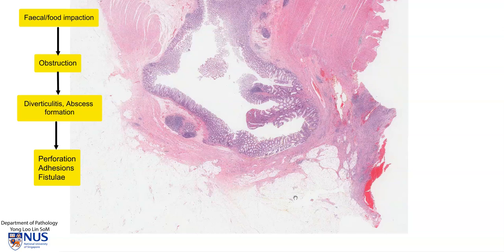Hence, we only have some thin connective tissue, some subserosal tissue, and this is at risk of perforation. In the event of perforation, there may be adhesions to adjacent structures within the abdominal cavity or bowel loops. And there can even be fistula formation to adjacent loops of bowel, and this is a complication of diverticular disease and diverticulitis.